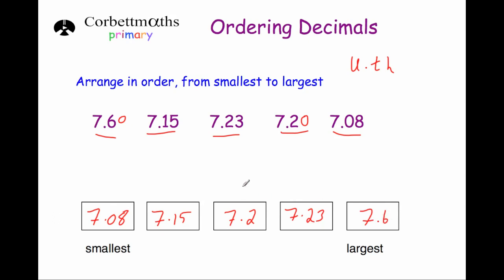And that's it. In order from smallest to largest: 7.08, 7.15, 7.2, 7.23 and 7.6.